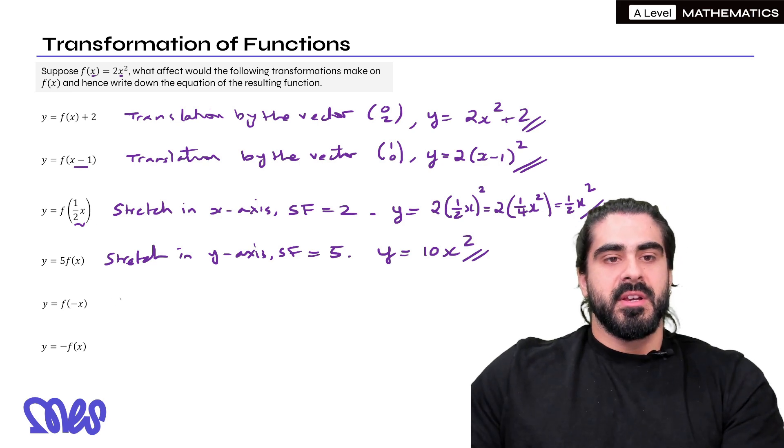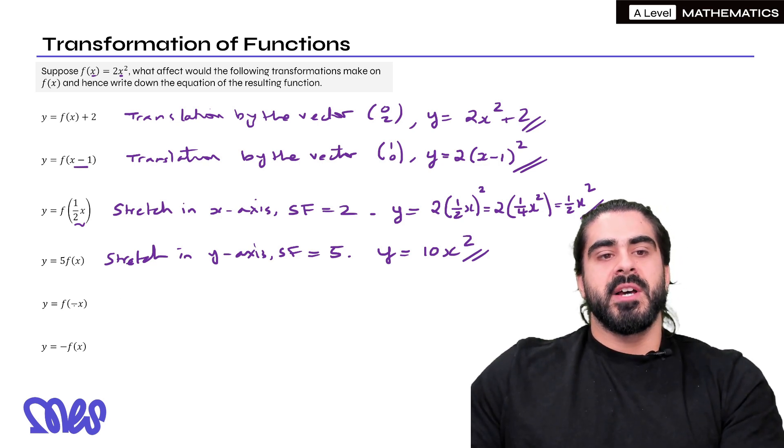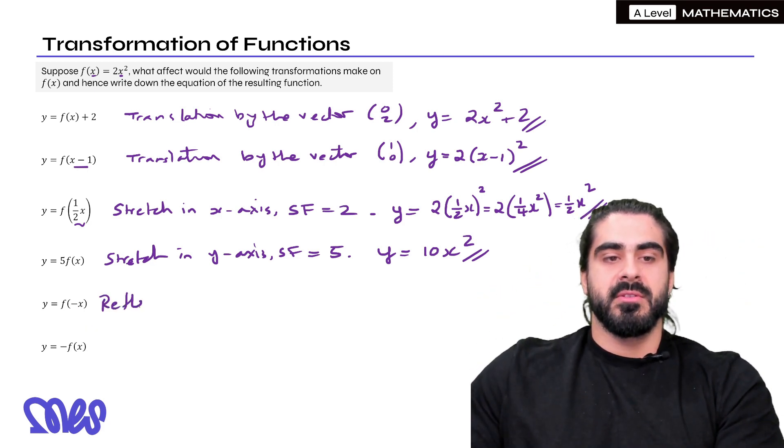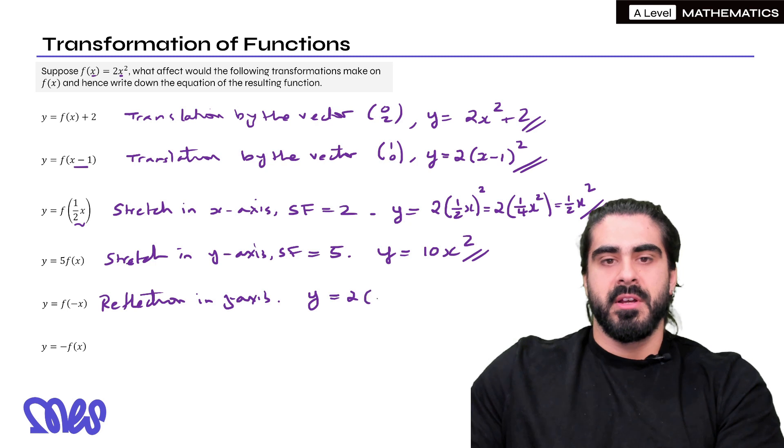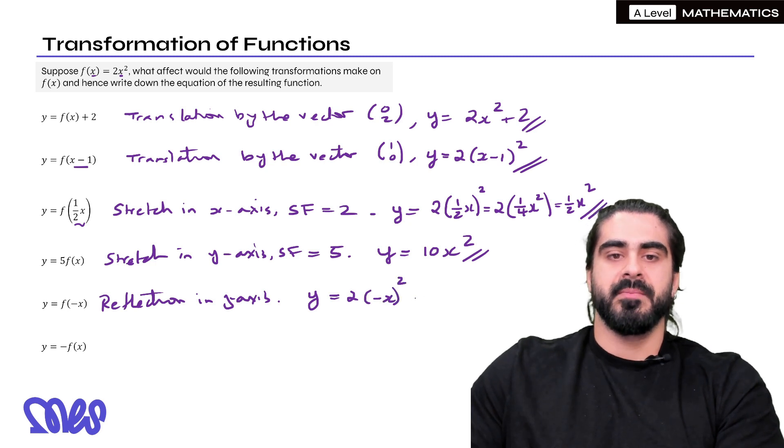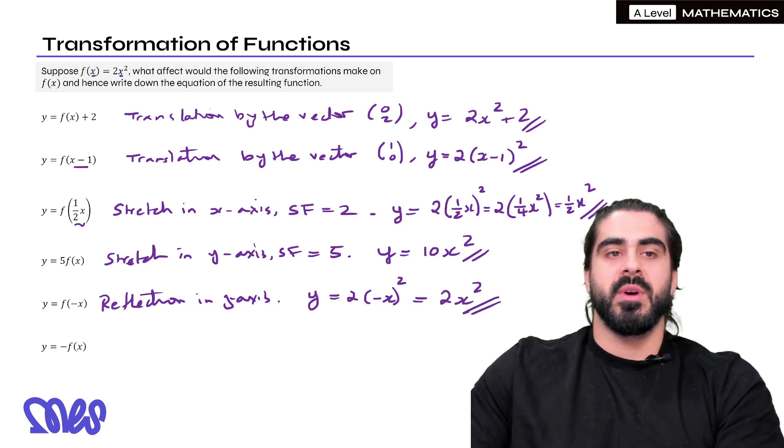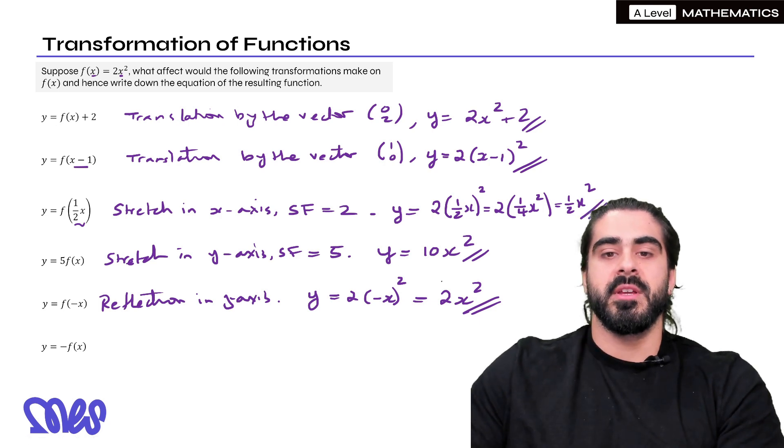f(-x). So here we're timesing all the x values by minus 1. So all the positive x values become negative. So here's a reflection in the y-axis. Well the equation, again we're changing all the x's into minus x. So it'll be y = 2(-x)². For anything squared, any negative squared is just positive. So it actually stays the same. And we know this because if you were to sketch 2x² it's symmetrical around the y-axis anyway. So if you're reflecting the y-axis it doesn't do anything.